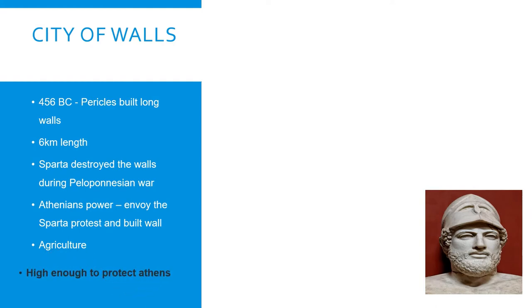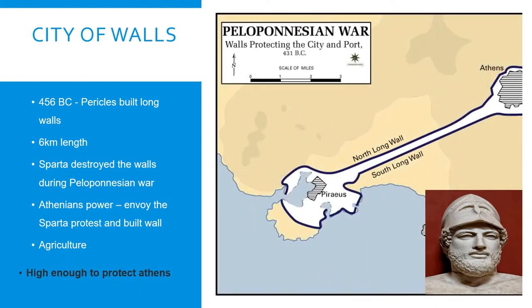Unfortunately the wall did not last long to save Athenians. After Pericles' death, Sparta destroyed the walls, but later in 395–391 BC the wall was rebuilt with Persian support.